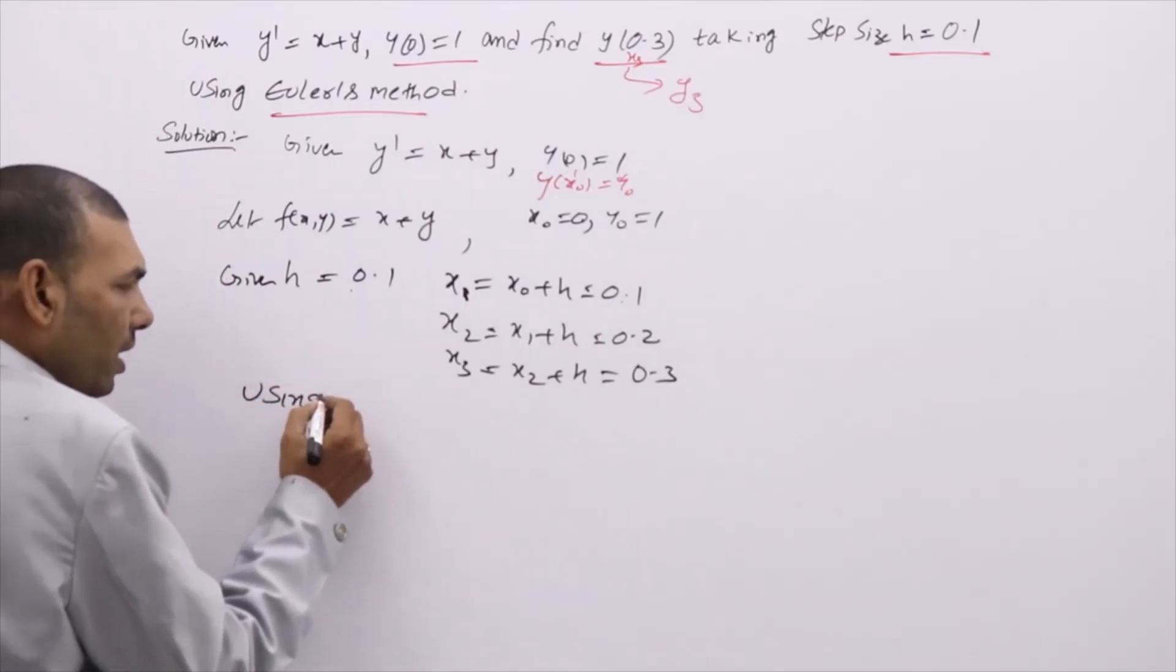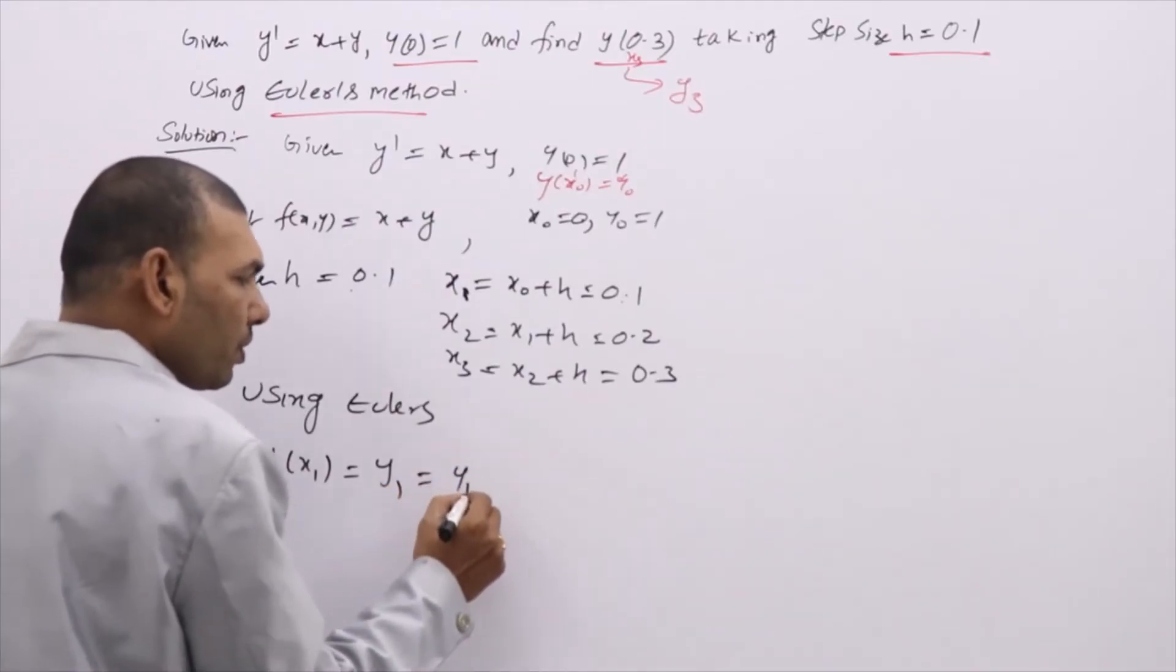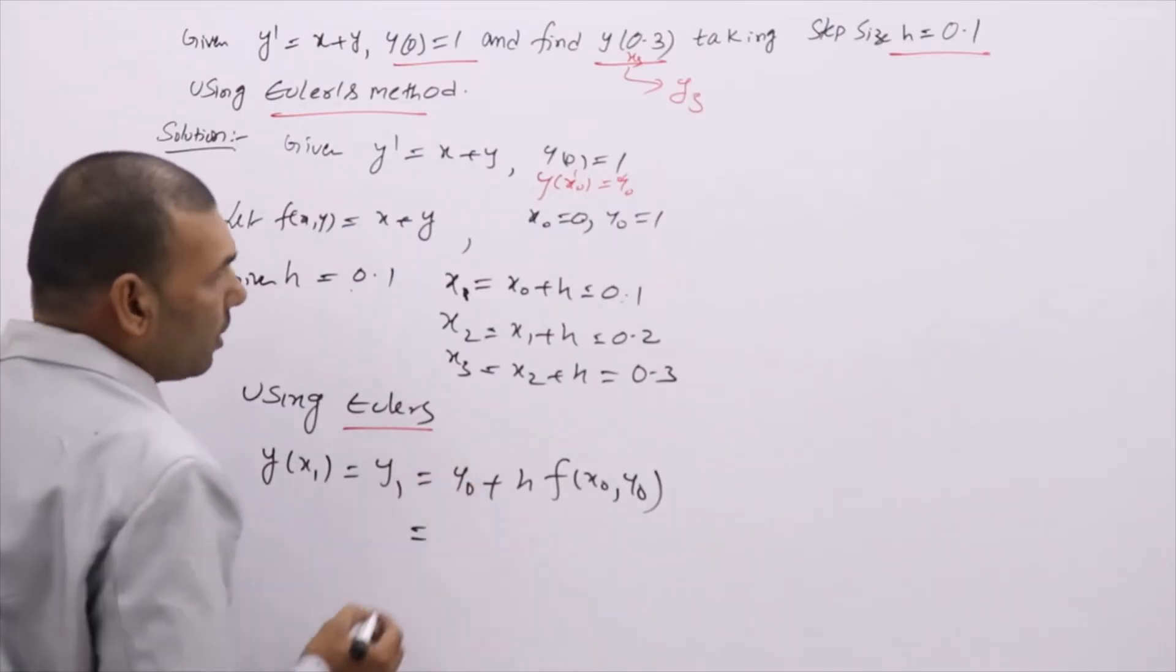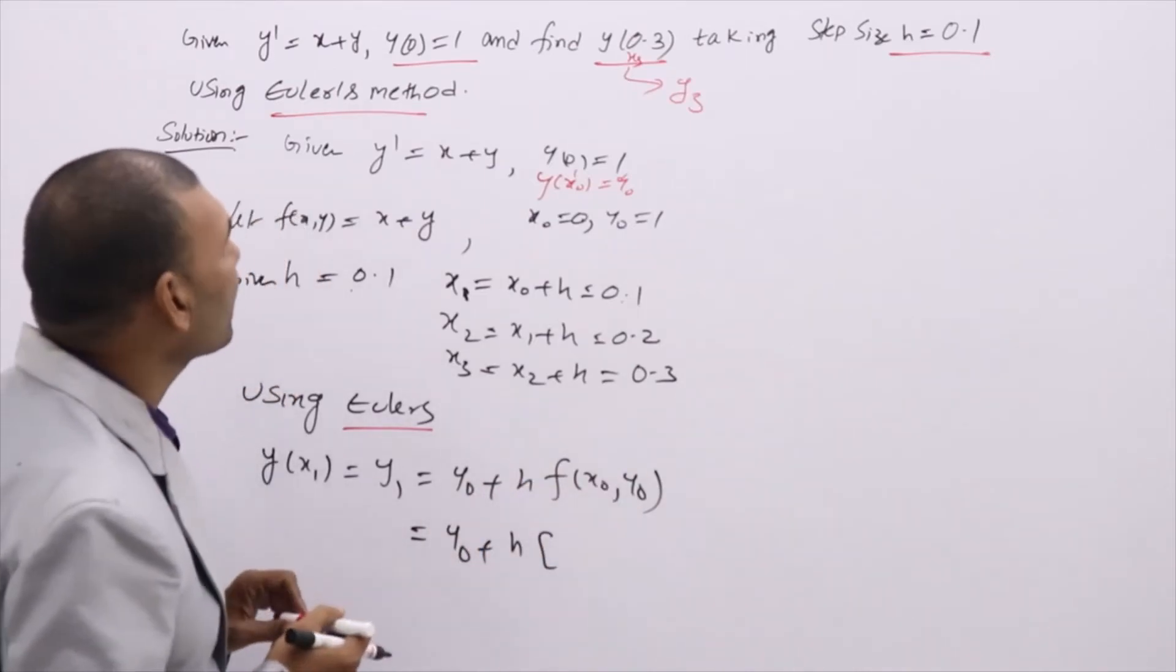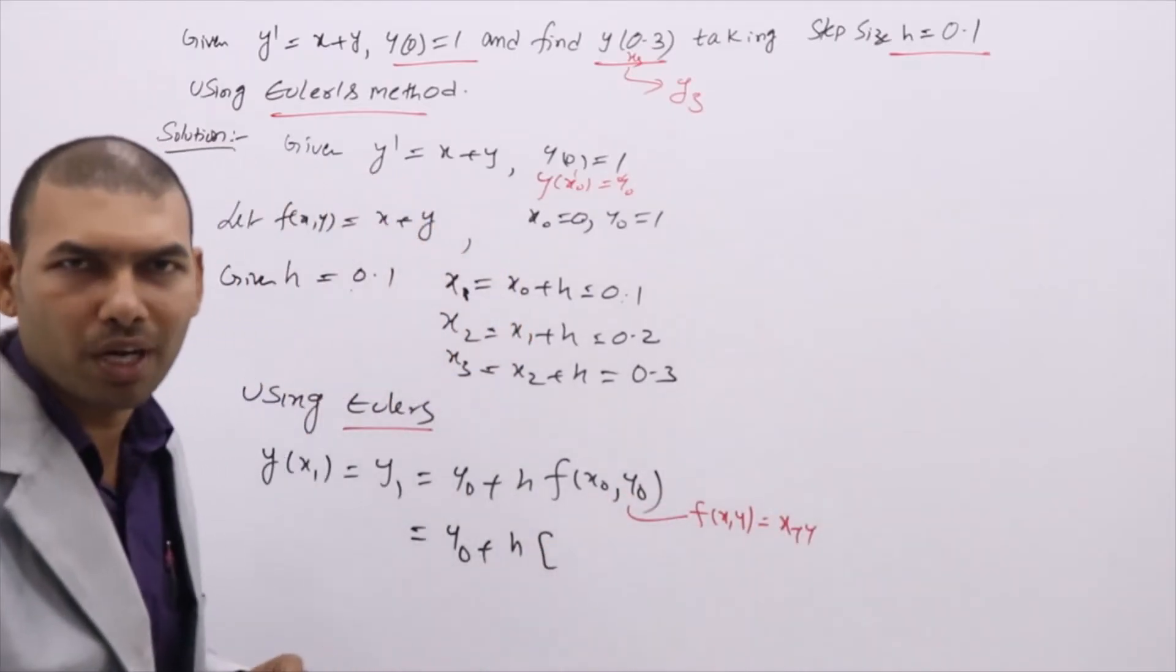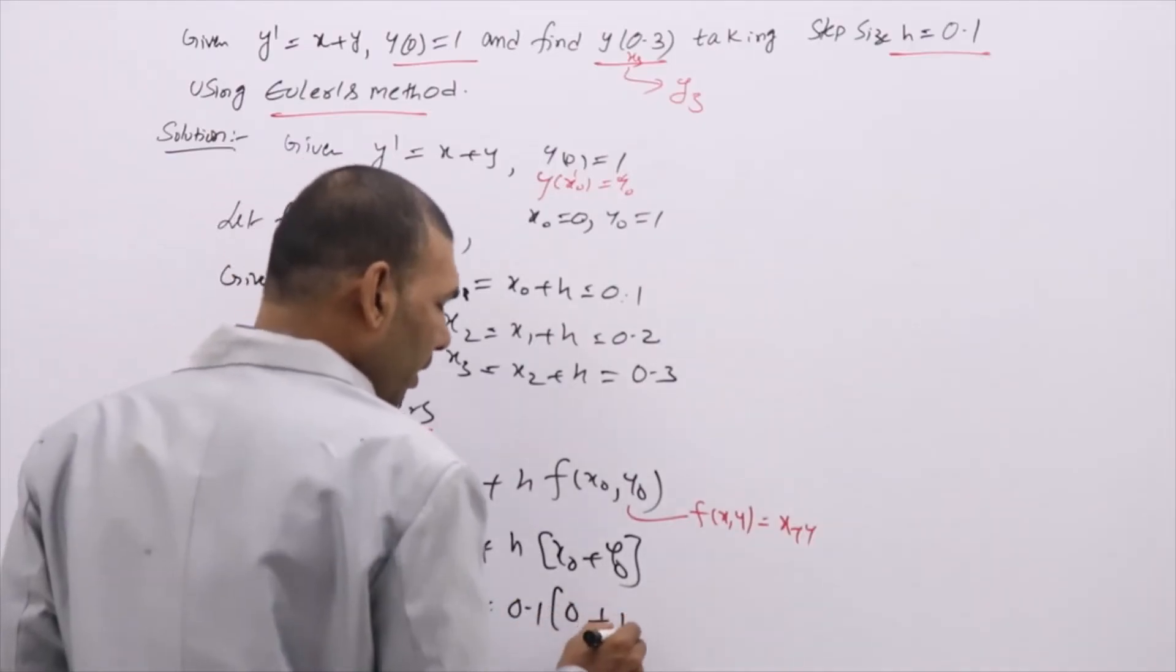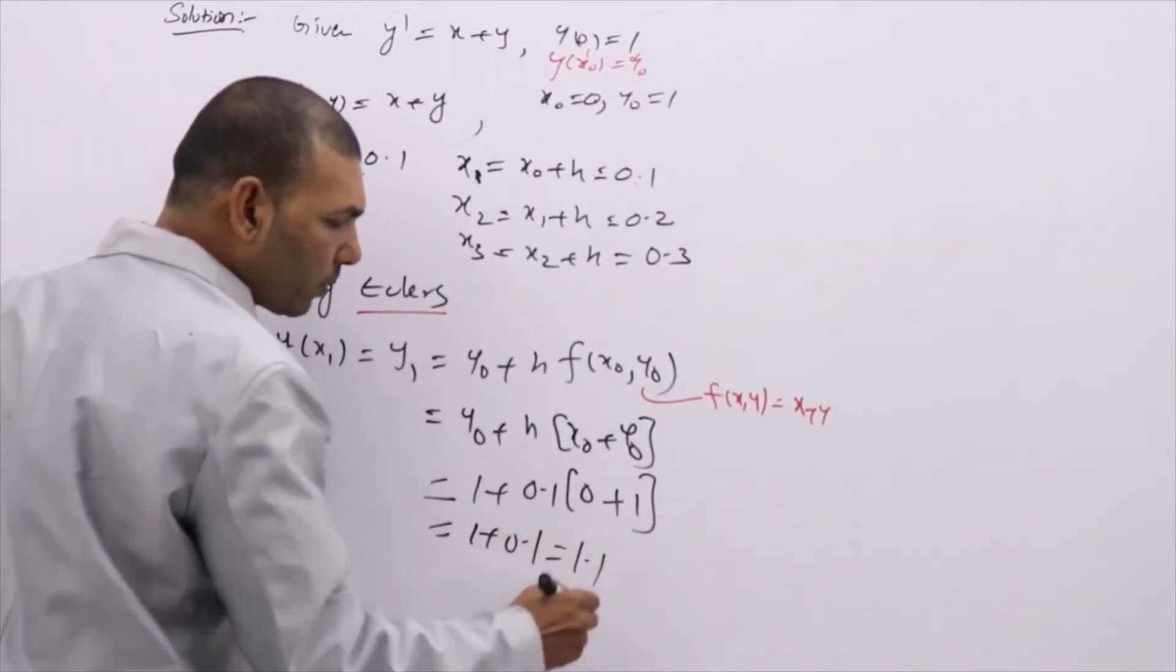first using Euler's we are finding y₁. Using Euler's, y(x₁) which is called y₁ = y₀ + h·f(x₀, y₀). This is formula in Euler's method to find y₁. Before going to write y₀ first we are creating the complete formula like this: f(x₀, y₀). f(x,y) is x + y. That means you need to add the two terms, x₀ + y₀. Now substitute: y₀ is 1, h is 0.1, x₀ is 0, y₀ is 1. What you get: 1 + 0.1(0 + 1) = 1 + 0.1(1) = 1 + 0.1 = 1.1